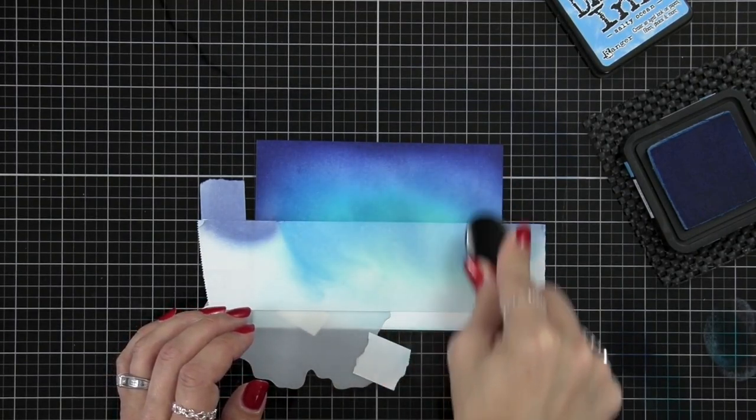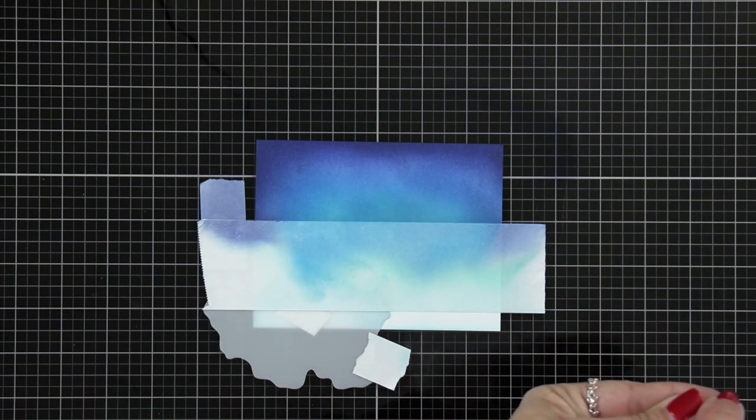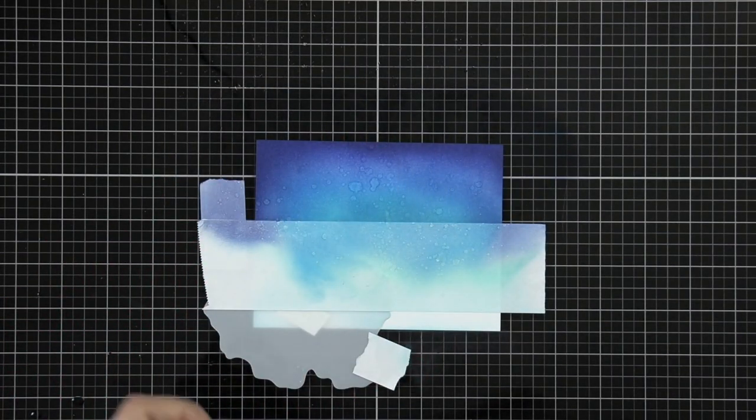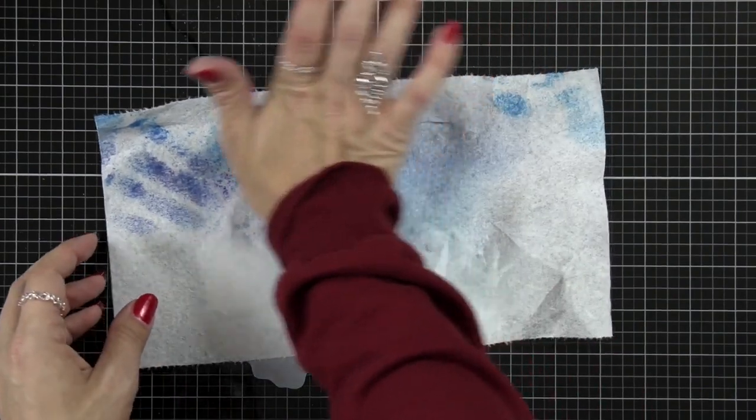Now once everything is all blended on and I'm happy with the background I'm leaving everything in place and I'm going to take some water that I have in a mister bottle spritz it onto my fingertips and then flick this all over the background. So because I use the distress inks they react really well with water and I will just pick up that water with a paper towel.